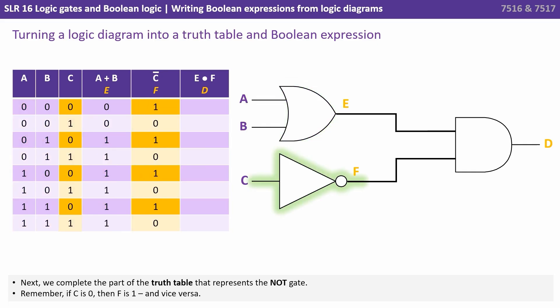Next we complete the part of the truth table that represents the NOT gate. So remember if C is 0 then F is 1 and vice versa. That's nice and easy and we've done that there.